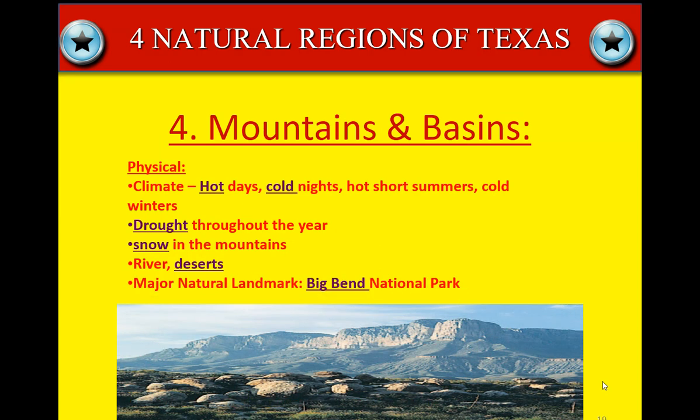The major natural landmark is Big Bend National Park. Another major landmark in the mountains and basins is Guadalupe Mountain — that is the highest point in Texas. If you ever get a chance to hike it, there's a trail you can take all the way to the top. It's about an eight-mile trail that will take you two and a half to three hours, and it is beautiful once you get up to the top.